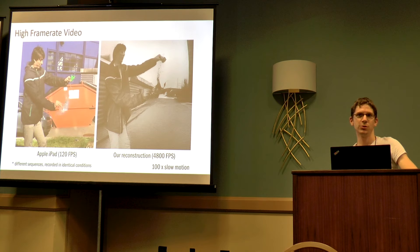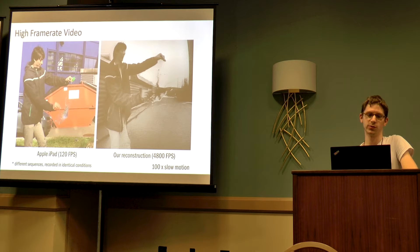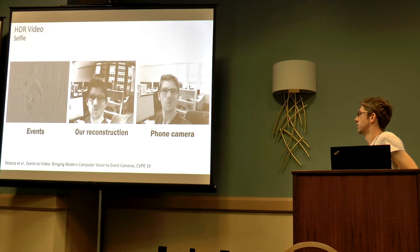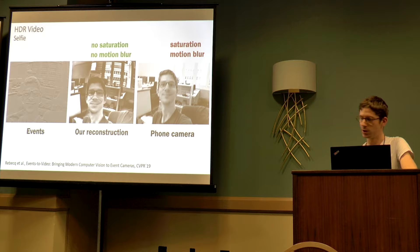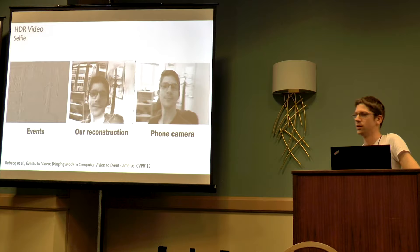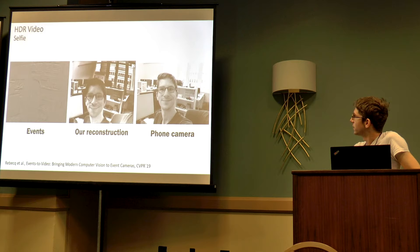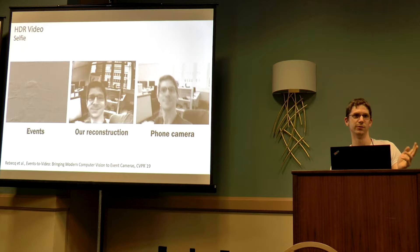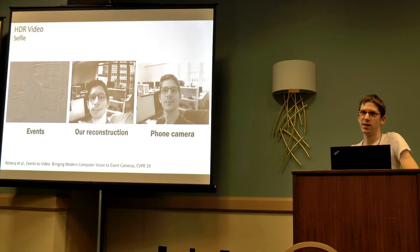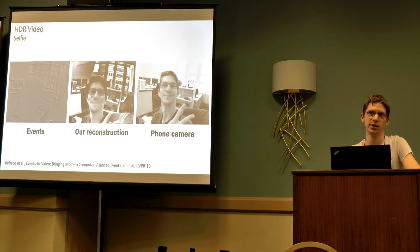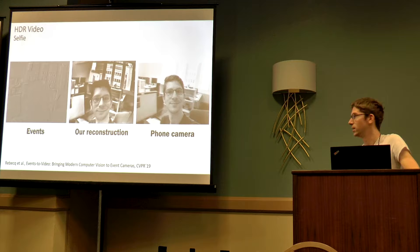Another interesting aspect of event cameras is their high dynamic range. In this selfie example, you have on the left the events from the Samsung DVS camera at VGA resolution. In the middle is our reconstruction, and on the right a high-quality frame camera. The window behind is very bright and saturating in the phone camera, while the reconstructions do not suffer from this problem. Also, natural hand shake generates motion blur, but because of what event cameras are, we don't suffer from this either.